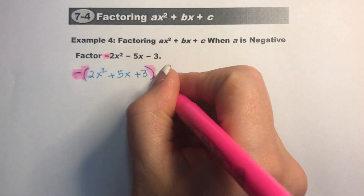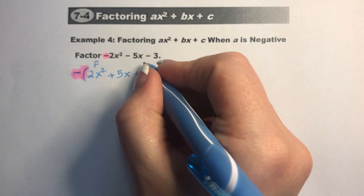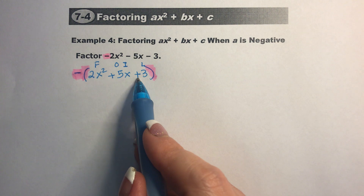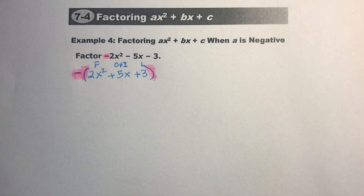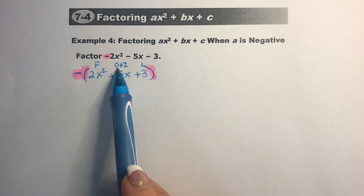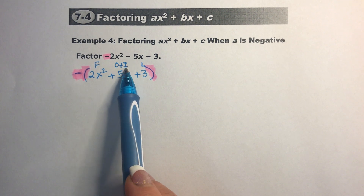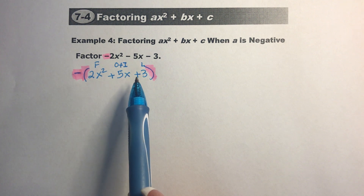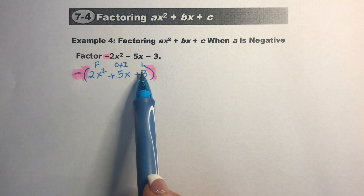Then we just go to factoring. This is our first term, this is our last term, and this is going to be the combination of the outside and the inside. Since we factored out that negative, we're going to be adding the outside and the inside to get 5. So we're going to be adding two terms together to get 5, which means both numbers have to be fairly small — like 1 and 4, or 2 and 3.